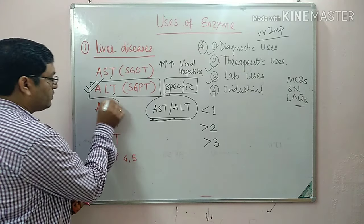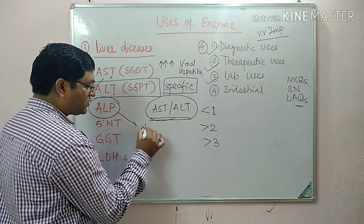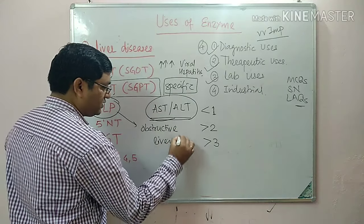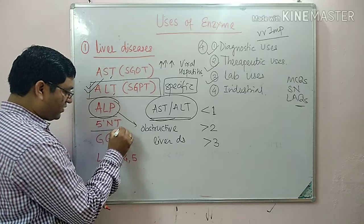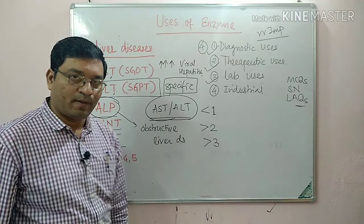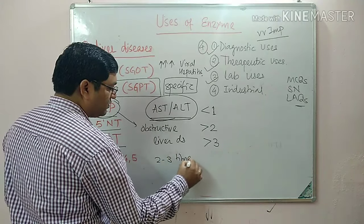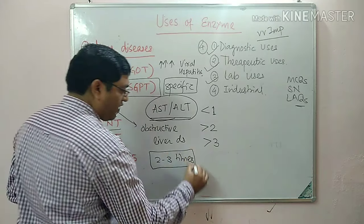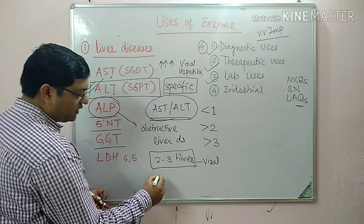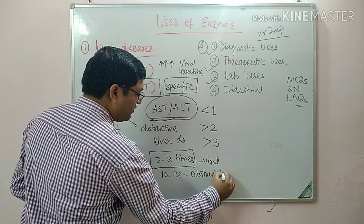Alkaline phosphatase is a marker of obstructive liver disease. ALP, 5'-nucleotidase, and gamma-glutamyl transpeptidase indicate obstructive liver pathology. There is an increase of two to three times the normal ALP in viral hepatitis, but it is up to 10 to 12 times the normal in obstructive liver pathology.